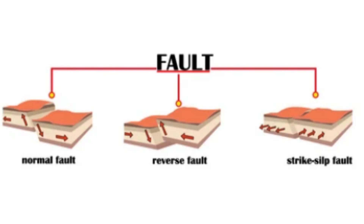In a reverse fault, rocks on one side of the fracture move upward relative to the rocks on the other side. This can occur when the earth's crust is being compressed, such as along a convergent plate boundary.